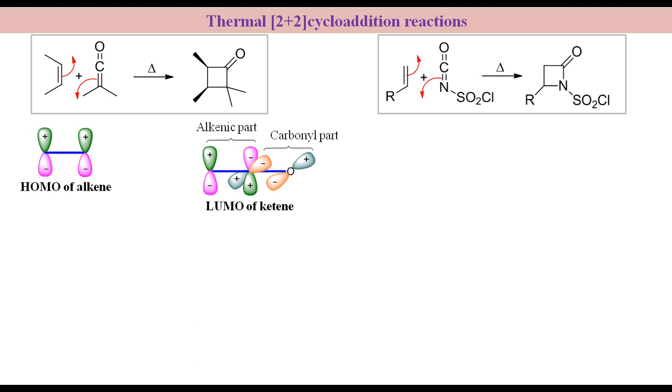To understand this bonding more clearly, let's turn the HOMO of alkene 90 degrees around the axis and then put the LUMO of alkenic part of ketene on the top of HOMO of alkene.